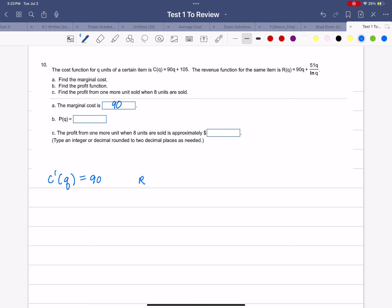Next we've got to find profit. Profit is equal to revenue minus cost. If you're not careful, you'll miss a sign here. Our revenue is 90Q + 51Q over the natural log of Q minus, in parentheses, 90Q + 105. You have to subtract the whole thing, not just the first part.